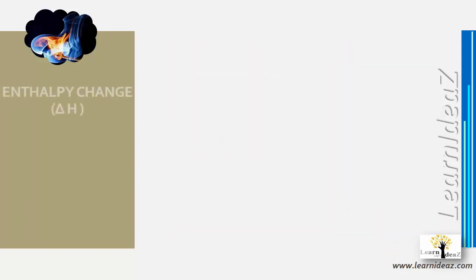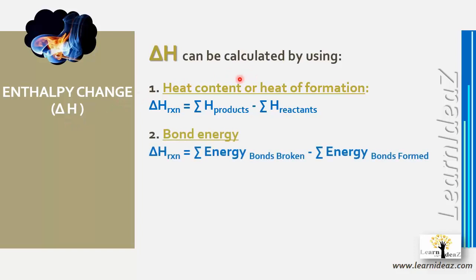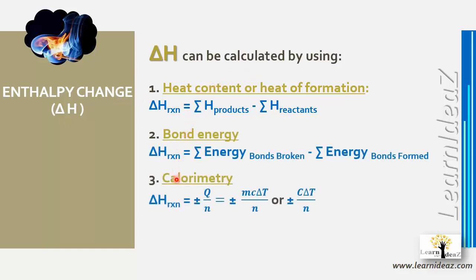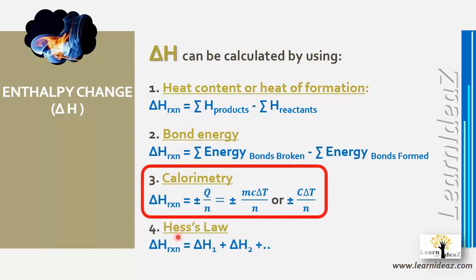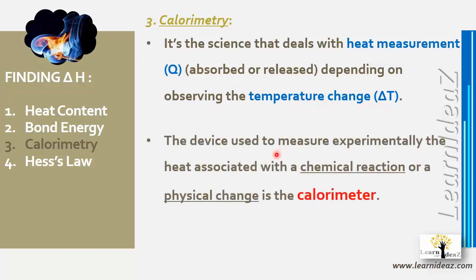The third term is enthalpy change, delta h. Delta h can be calculated by different techniques: heat content, bond energy, calorimetry, and Hess's law. In this video we focus on calorimetry. Calorimetry is the science that deals with heat measurement — whether absorbed or released in a reaction — by observing the temperature change, delta t. The device used to measure heat experimentally is called a calorimeter.